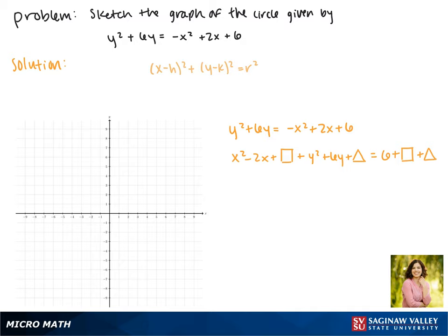Remember that by completing the square, to find that constant what we have to do is b over 2 all squared. So for the x's, the b value is negative 2, half of negative 2 is negative 1, squared is 1, so we'll add a 1 to each side.